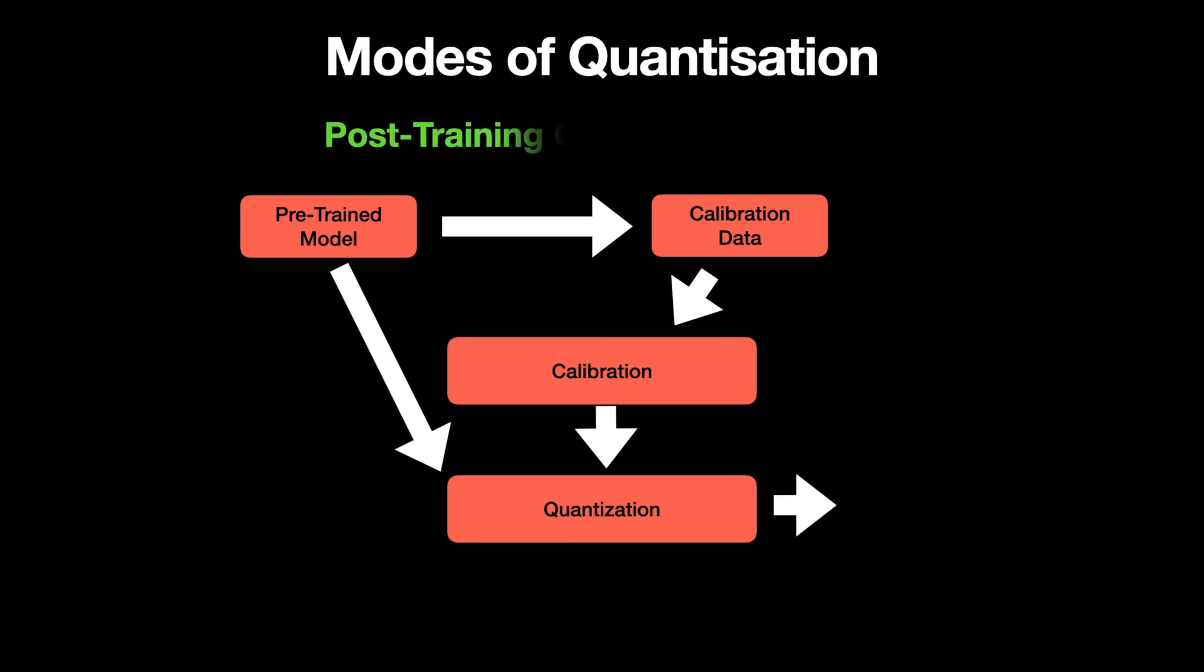In post-training quantization, or PTQ in short, we start with a pre-trained model without further training it. The only data needed from the model is the calibration data to calculate the clipping range and hence the scale factor and zero point. This data, in most cases, comes from the model weights. Once we calibrate, we can then quantize the model and obtain the quantized model.